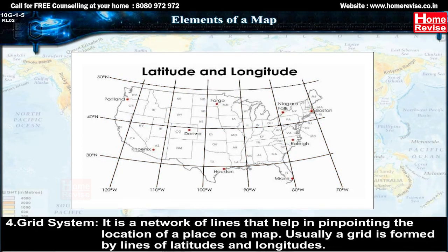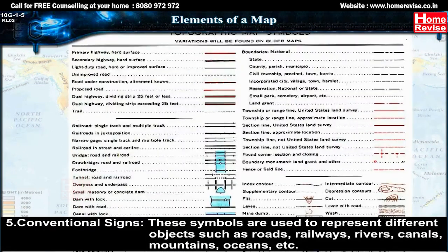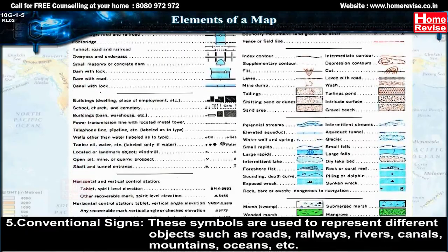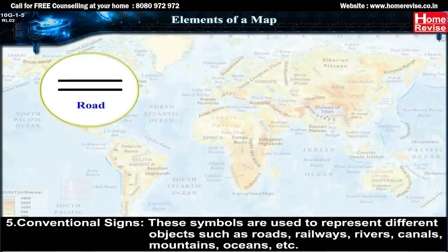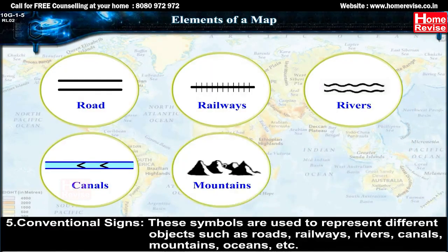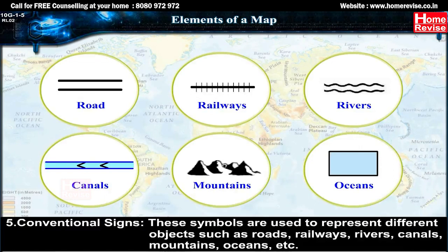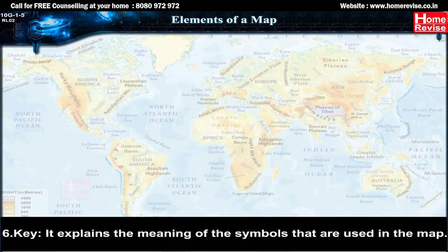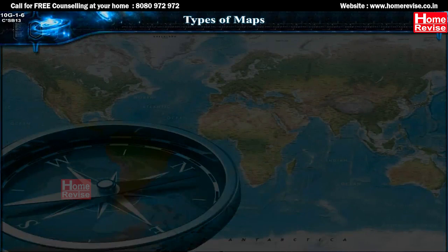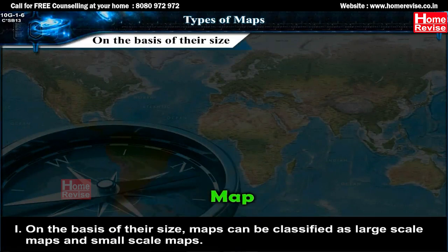Usually a grid is formed by lines of latitudes and longitudes. Five: conventional signs — these symbols are used to represent different objects such as roads, railways, rivers, canals, mountains, oceans, etc. Six: key — it explains the meaning of the symbols that are used in the map.